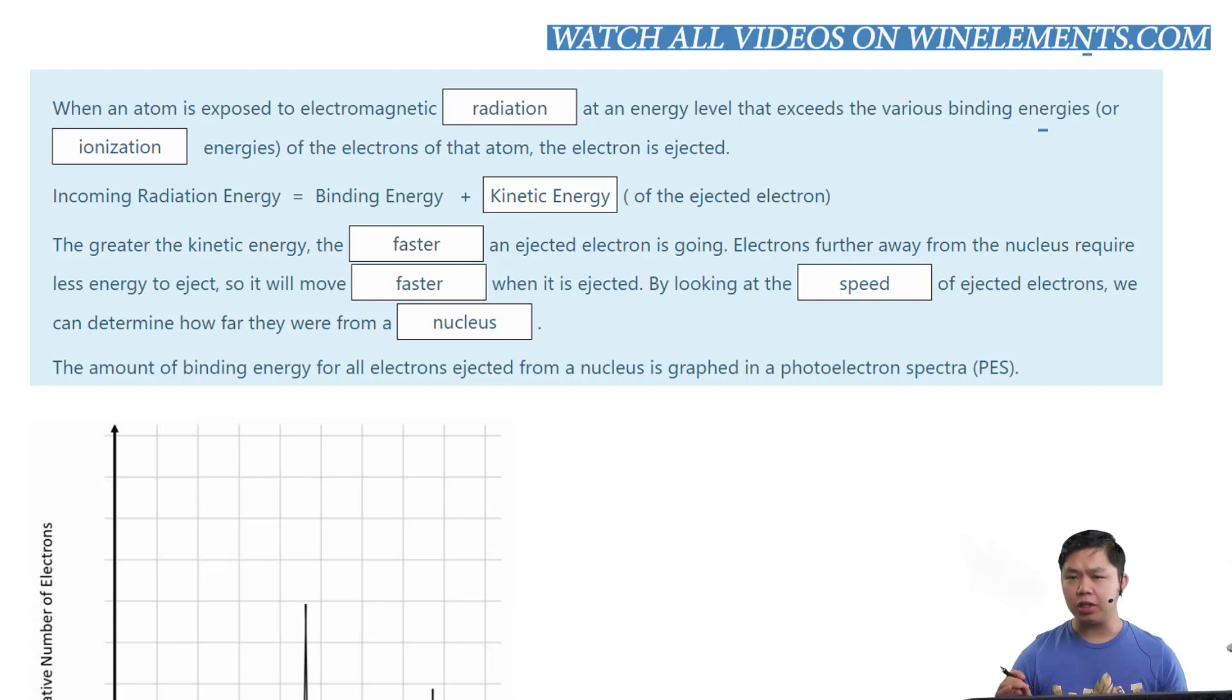at a specific energy level that exceeds the binding energy, which is also used to represent ionization energy, of that electron, the electron is going to be ejected. Basically the way it works is, electrons absorb those radiation in form of energy, and once they have enough energy, they will travel faster until they escape from atoms.